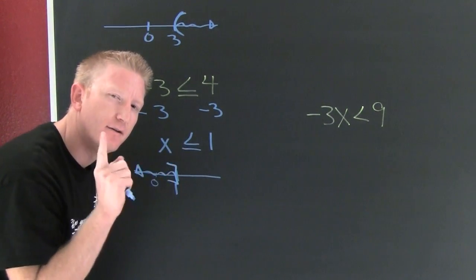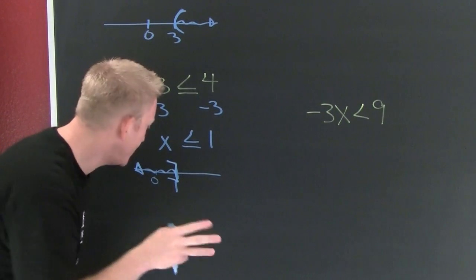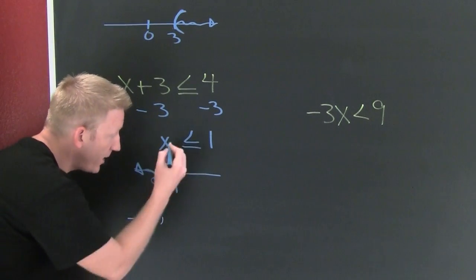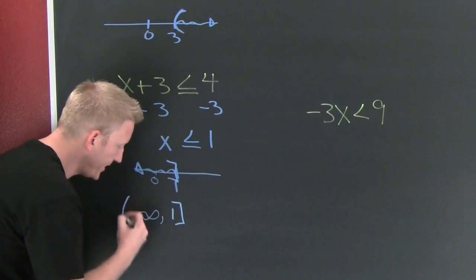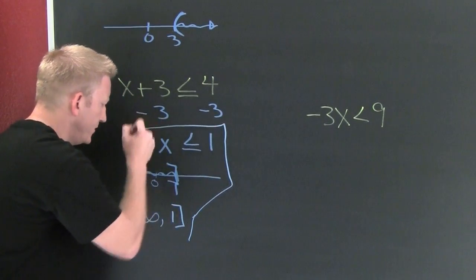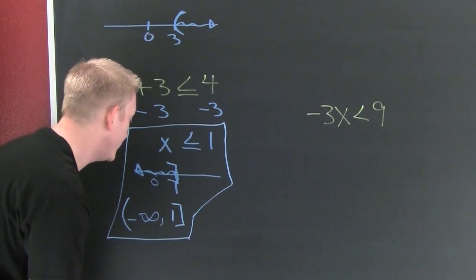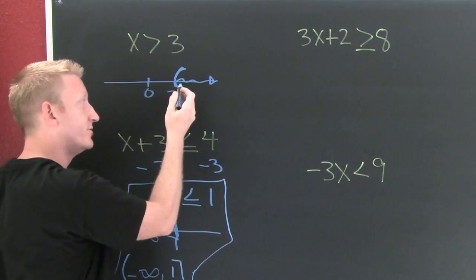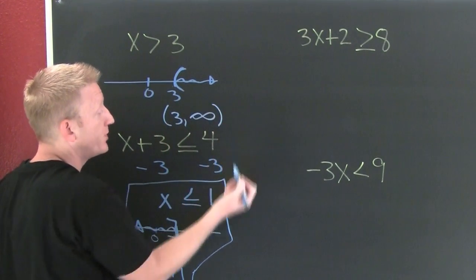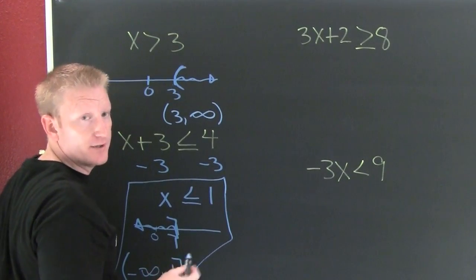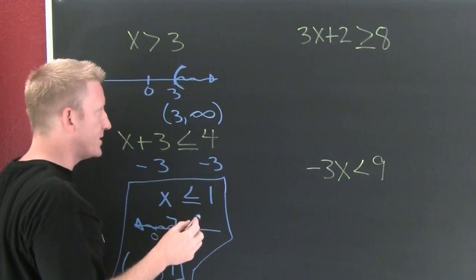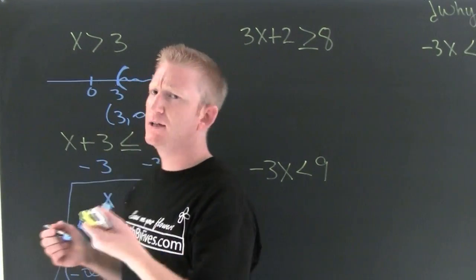Is it going to be open or closed? Closed — because of the 'or equals to.' In interval notation, my leftmost point is negative infinity and my rightmost point is one, closed. You always write open on infinity. So all three — the solution, the graph, and the interval notation — are your answers. Interval notation for the first example is open parenthesis three to infinity.